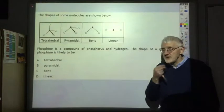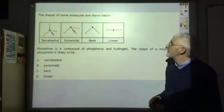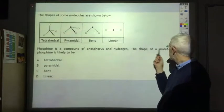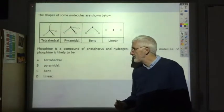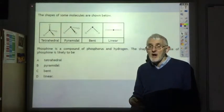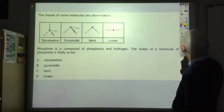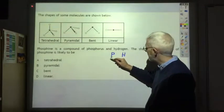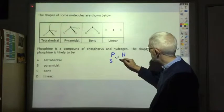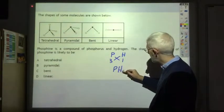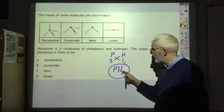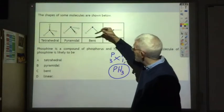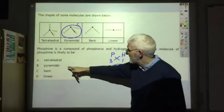Here is a common exam question: phosphine is a compound of phosphorus and hydrogen - what is the shape of a molecule of phosphine? To tackle this, work out how many atoms are in the molecule, so find the chemical formula. Phosphorus is in group 5, valency 3; hydrogen is in group 1, valency 1. Swap them over and it's PH3. There are four atoms in a molecule of phosphine, so the shape is the pyramidal structure - answer B.